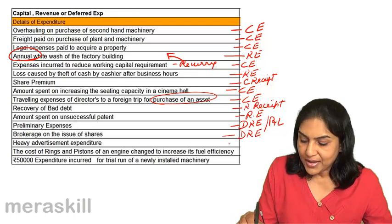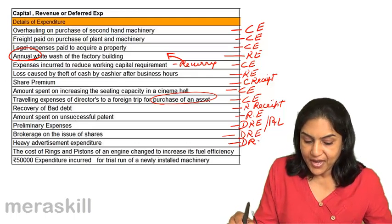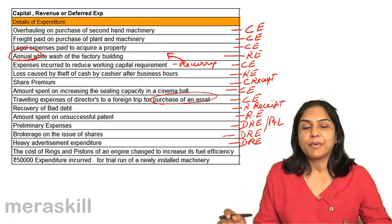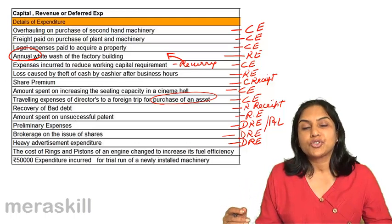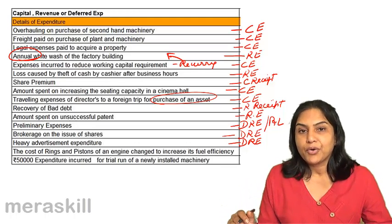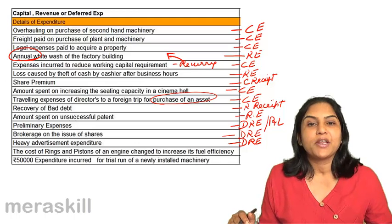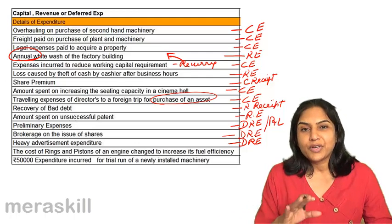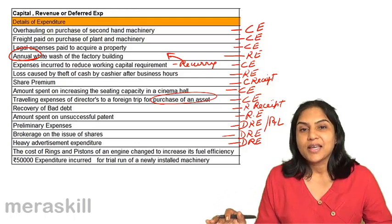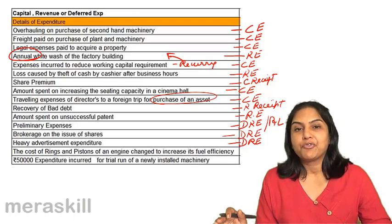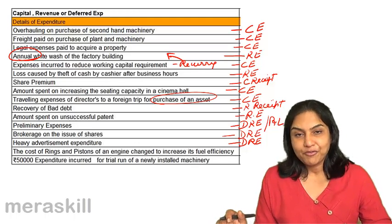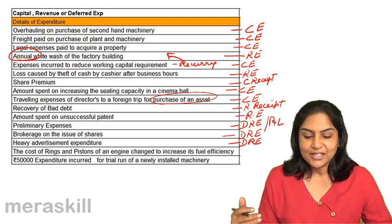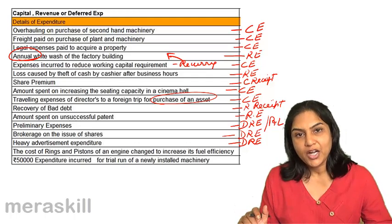The same applies to heavy advertisement expenditure. Because it is a very large amount — not the regular amounts of advertising — and we expect the benefit in future, we could spread this cost over say three to five years. Therefore, it is called a deferred revenue expenditure. As per AS26, these expenses are now to be written off to the profit and loss account.